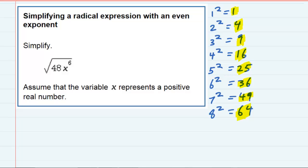Simplifying a Radical Expression with an Even Exponent. We're asked to simplify the square root of 48 times x to the sixth.